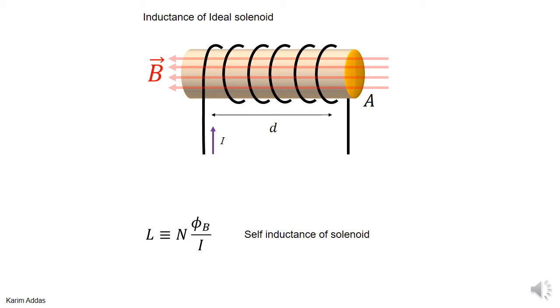Let's use the definition of inductance to find the inductance of an ideal solenoid. There's your solenoid, it has a certain number of turns N, the magnetic flux through each turn is φ_B, and the current is I.